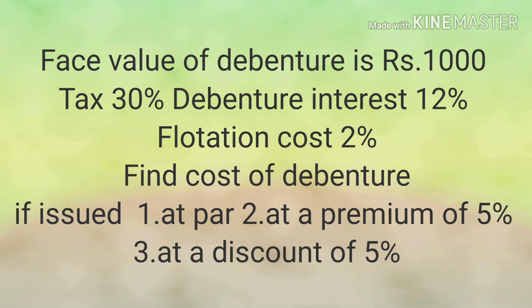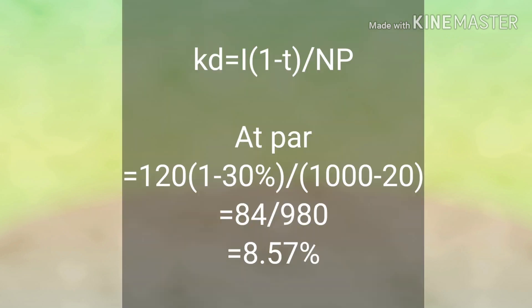Let us take an example. Face value of a debenture is Rs. 1000, tax 30%, debenture interest 12%, flotation cost 2%. Find the cost of debenture if issued at par, at a premium of 5%, and at a discount of 5%. The formula is Kd = I × (1 − t) / Np. Interest = 1000 × 12% = 120; I × (1 − t) = 120 × 70% = 84. Issued at par: Np = 1000 − 20 (flotation) = 980. Cost = 84 / 980 = 8.57%.